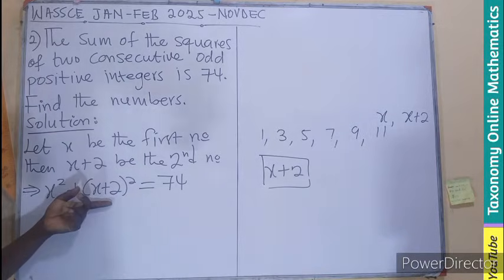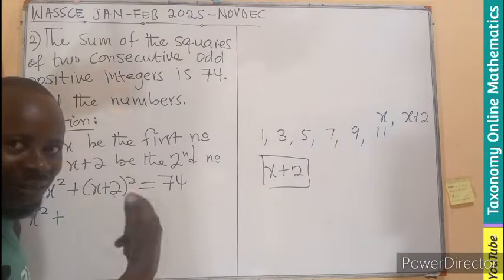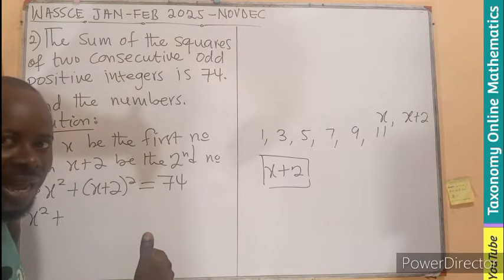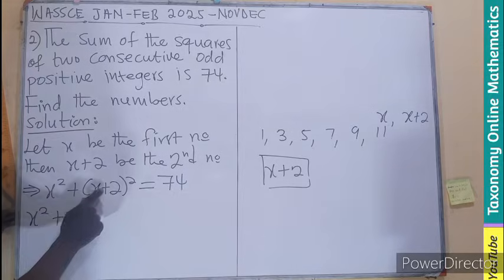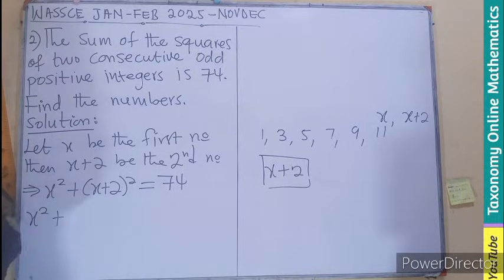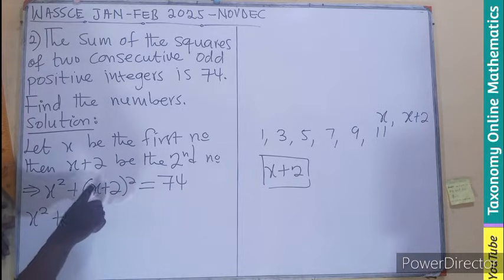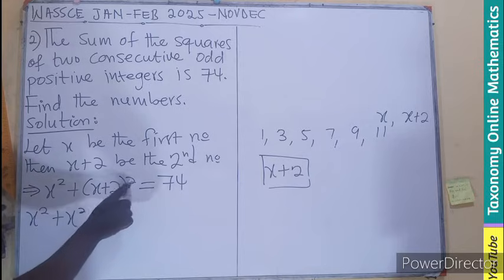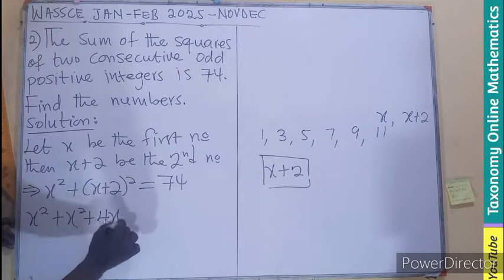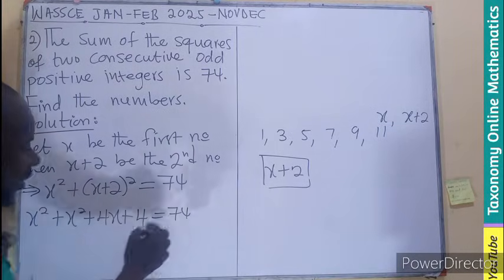This is a binomial which we can easily expand. Expanding gives us X squared. Remember when expanding a binomial: first term squared is X squared; twice the product of the terms is 2 times X times 2, which is 4X; and the last term squared is 2 squared, which is 4. So X squared plus 4X plus 4, and this also equals 74.